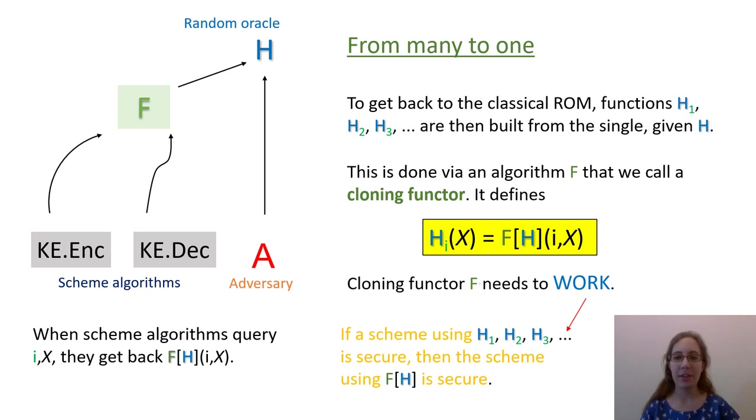We formalize it as the task of designing what we call a cloning functor, here denoted F. Its job is to specify H1, H2, and so on as functions of H. That is, the scheme using just one RO H is formed by taking the scheme using multiple random oracles and replacing H_i with F of i, and so on. Note that while scheme algorithms now access F and not H directly, we give the adversary access to H according to the random oracle model. Of course, the functor has to work, meaning that the scheme using a single random oracle should be secure, assuming that the one using multiple random oracles was secure. Depending on the choice of F, this may or may not be true.